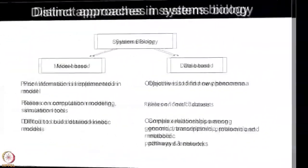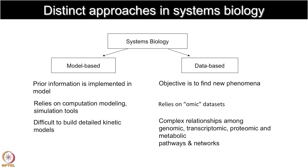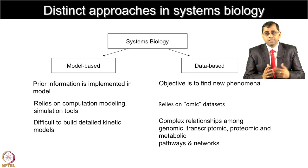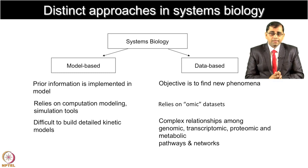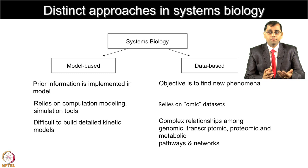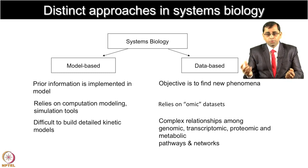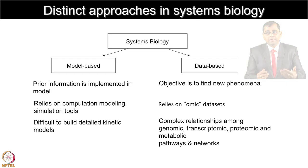What are distinct approaches in systems biology? It can be model-based or data-based. In the model-based approach, you already have prior data information which you want to implement and build the model. It relies on computational modeling and various tools for simulation, but it is very difficult to build detailed kinetic models just based on this information. The data-based systems biology approach involves finding new phenomena using these kinds of data sets. It relies on various omics data sets and looks at intricate, complex relationships by examining various components from the genome, transcriptome, and proteome to define various pathways and networks.